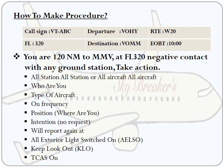Next is how to make the procedures. I have given a small flight plan for better understanding. Call sign: Victor Tango Alpha Bravo Charlie. Departure aerodrome: Hyderabad. Destination: Chennai. Route: Whiskey 20. Estimated off-block time: 1000. Assigned cruising flight level: 320. The example question is: you are 120 nautical miles to Mike Mike Victor — Mike Mike Victor is the VOR call sign for Chennai airport — at flight level 320, the cruising flight level, with negative contact with any ground station. Take action.